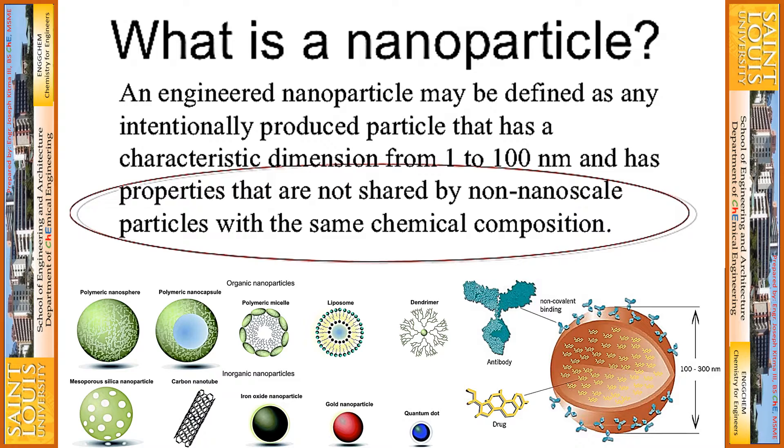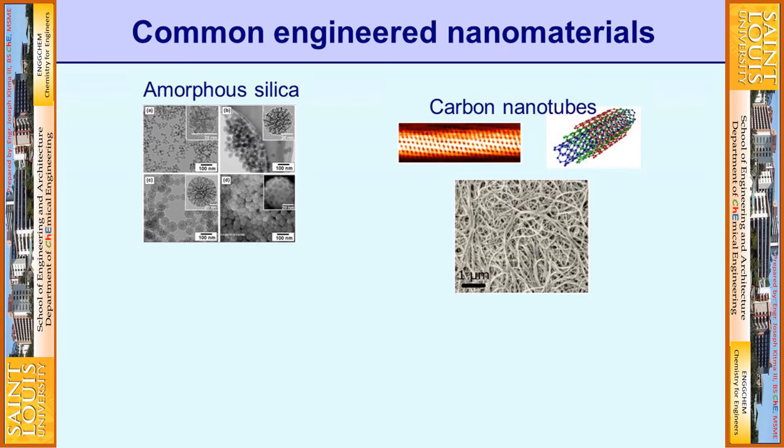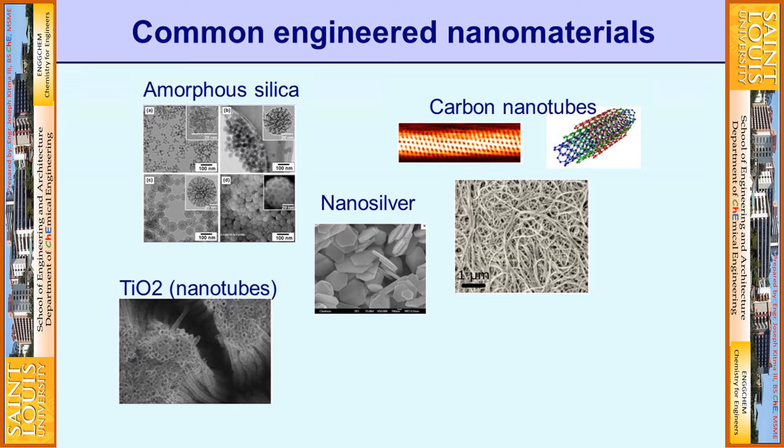Properties change including the characteristics, their functions, and their significance. Some common engineered nanomaterials include amorphous silica, carbon nanotubes, nanosilver, titanium oxide nanotubes, and nanogold.